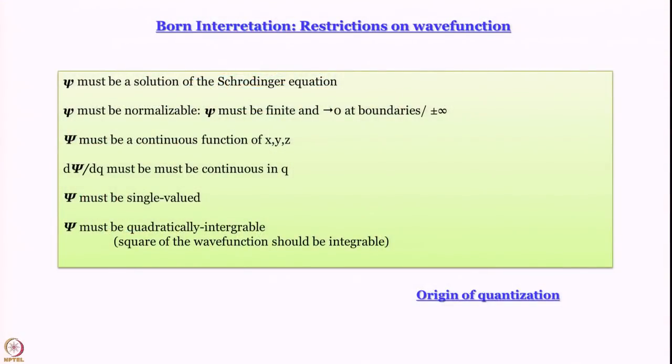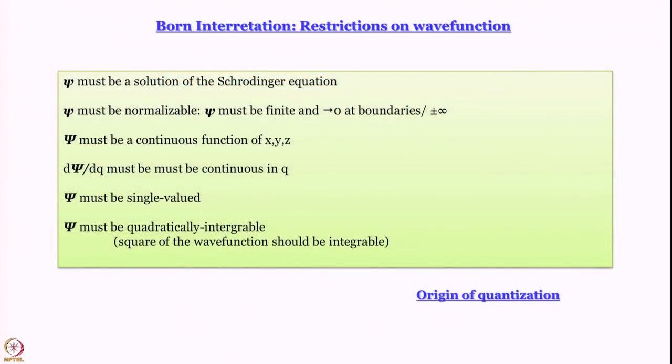The probability of finding a particle in one-dimensional space between x and x+dx is given by psi times psi-star dx. This probabilistic interpretation led to several restrictions on wave functions. Psi must be a solution of the Schrödinger equation and it must be normalizable — the integral of psi times psi-star over all space must equal 1, because the total probability of finding the particle somewhere must be 1. Psi must also be finite, because if it is infinite at even one point, the integral of psi psi-star d-tau cannot equal 1, and psi must vanish at the boundaries.